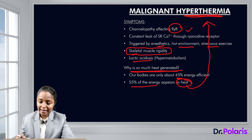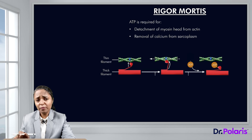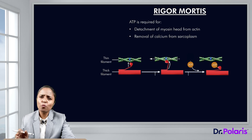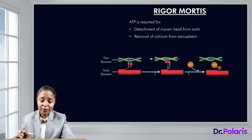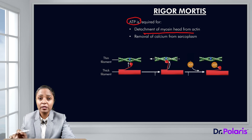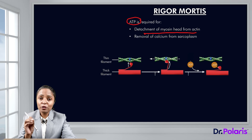Rigor mortis is muscle rigidity that occurs after death, and as you may be aware, it is used to determine time since death in forensics. If you have understood cross-bridge cycling, you will understand that ATP is required for detachment of the myosin head from actin — only when ATP attaches to the myosin does the myosin head detach from the actin.